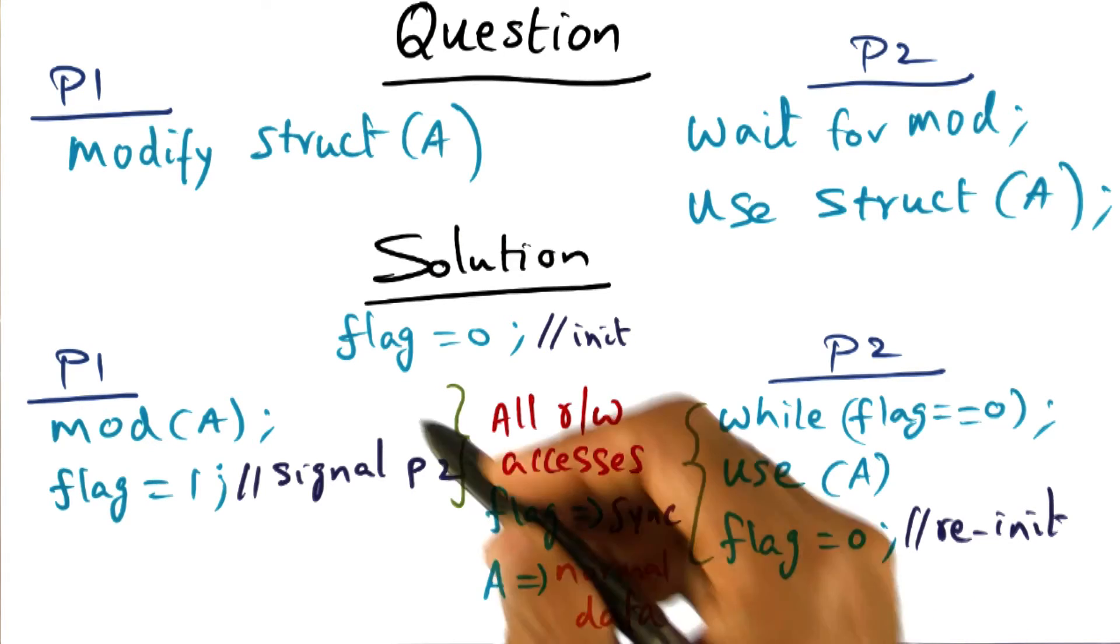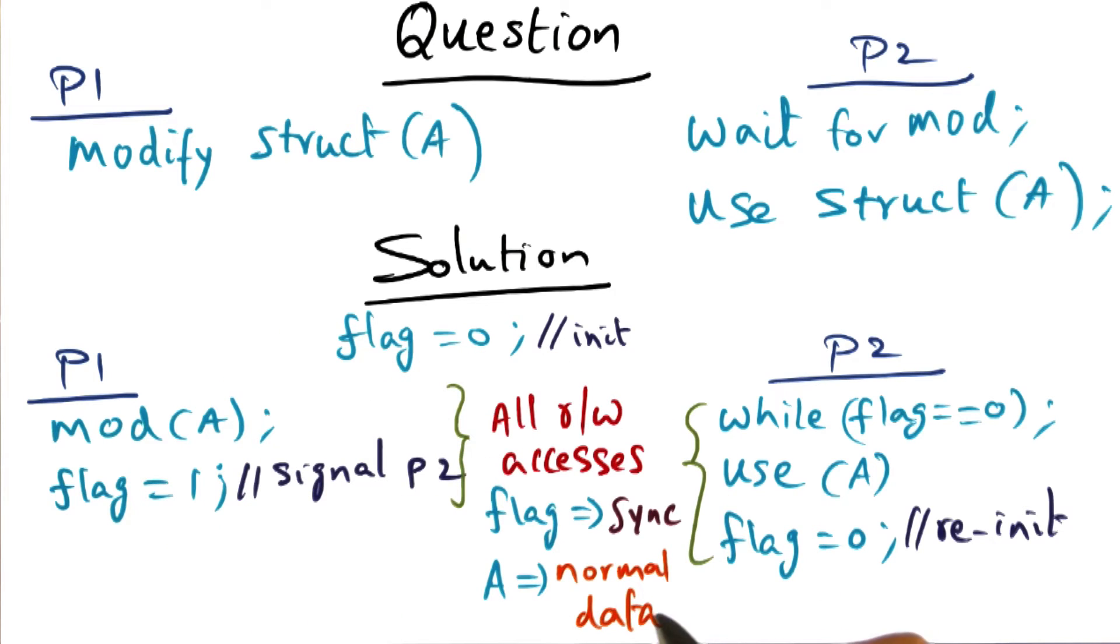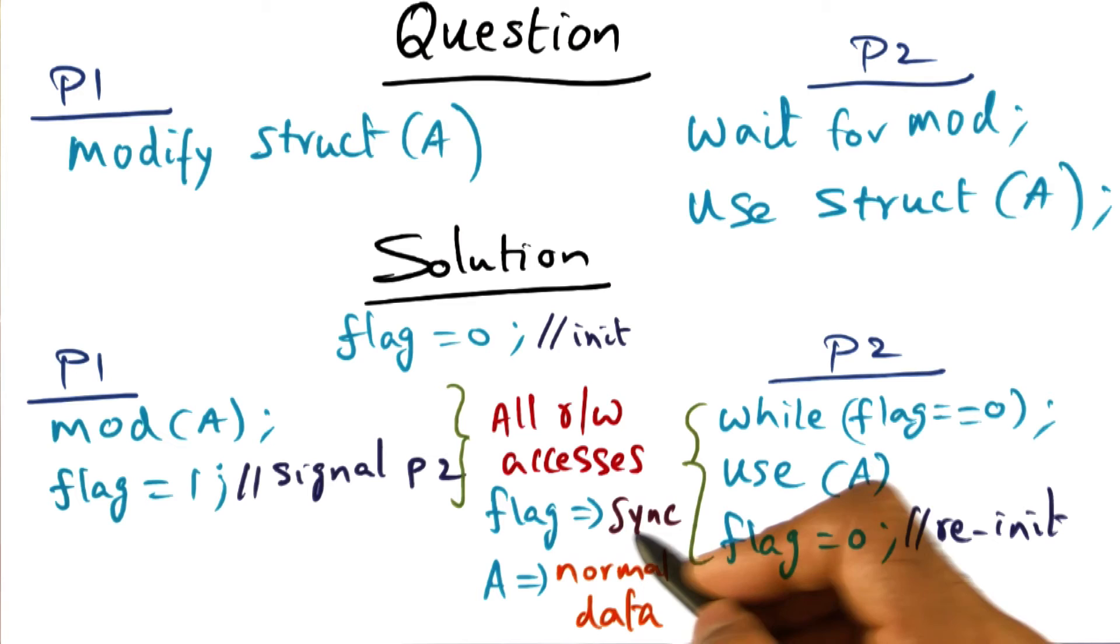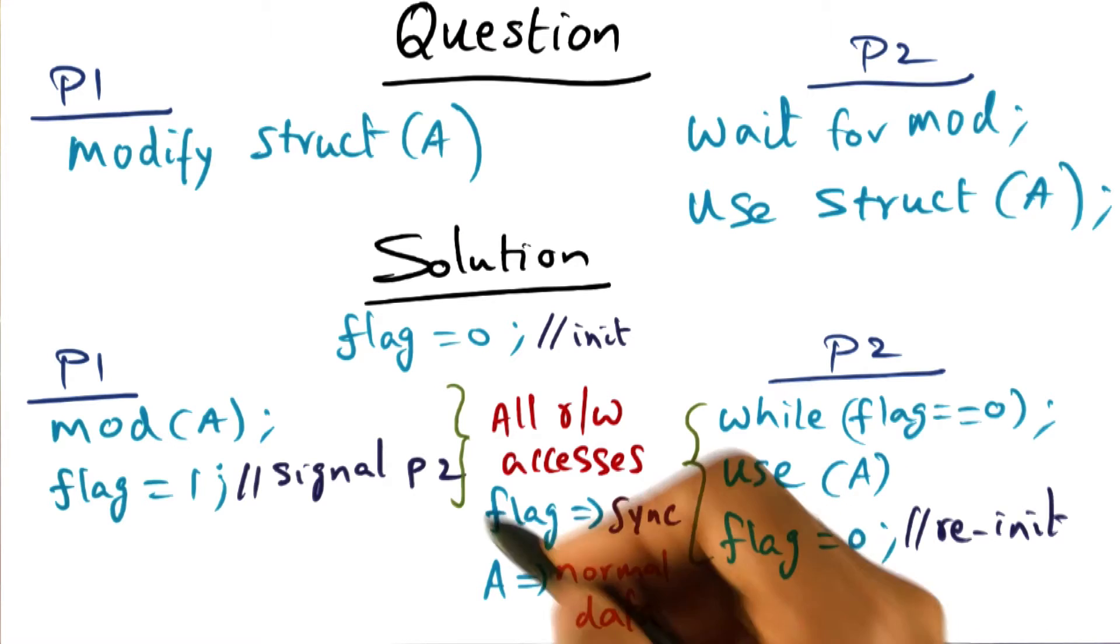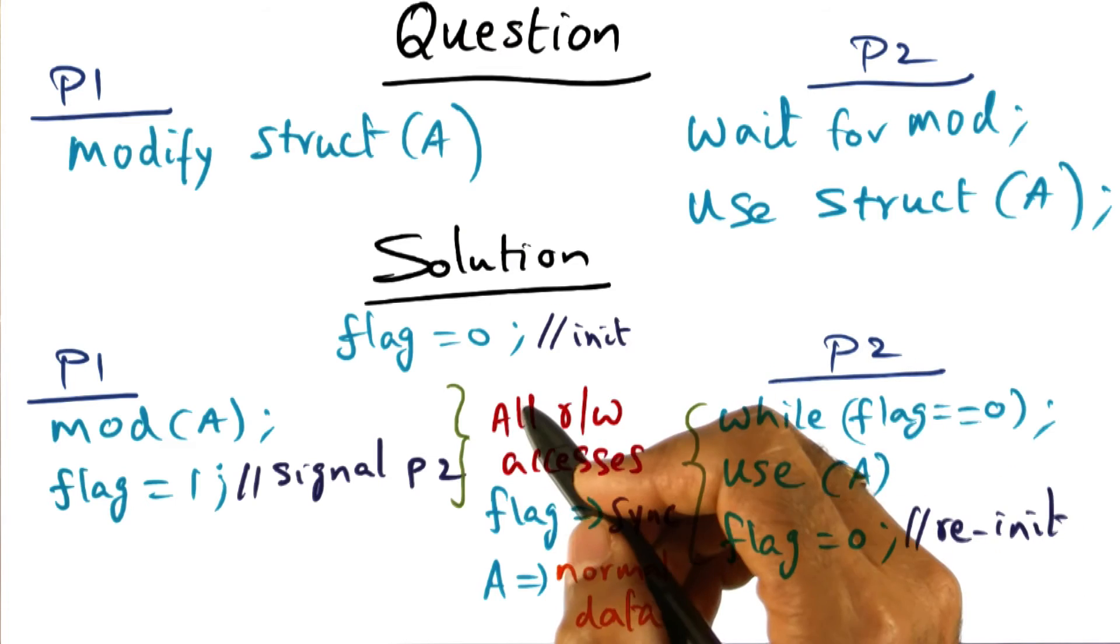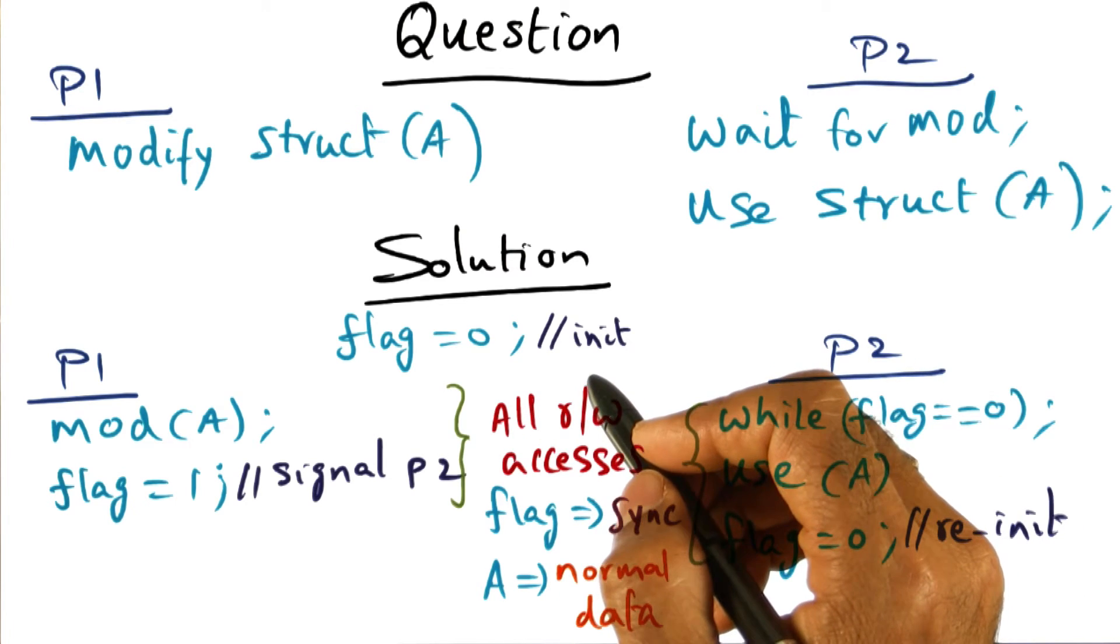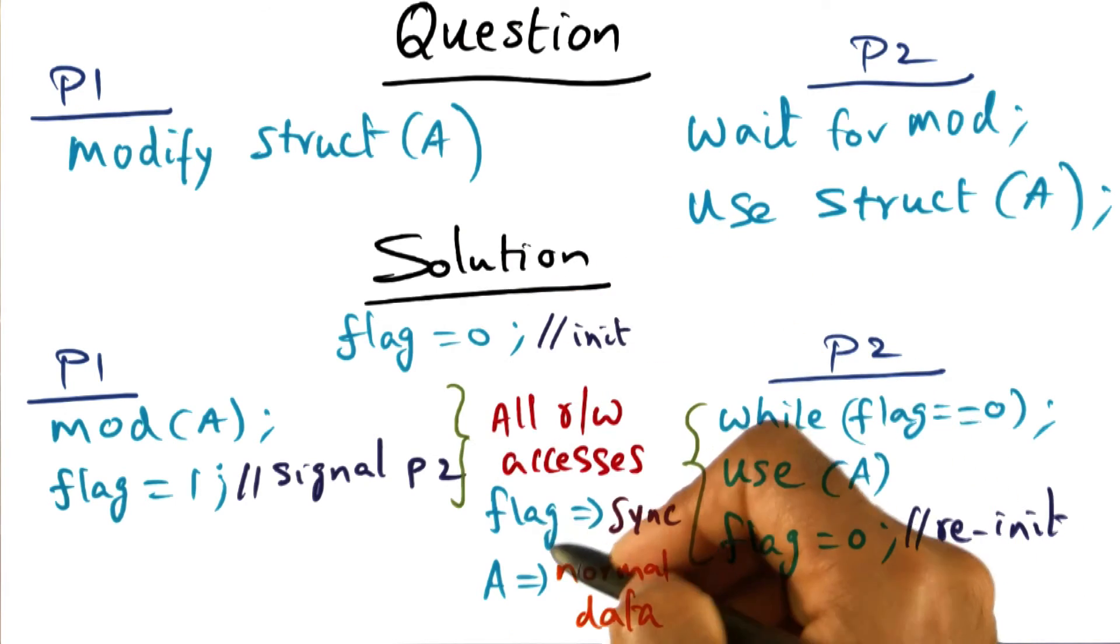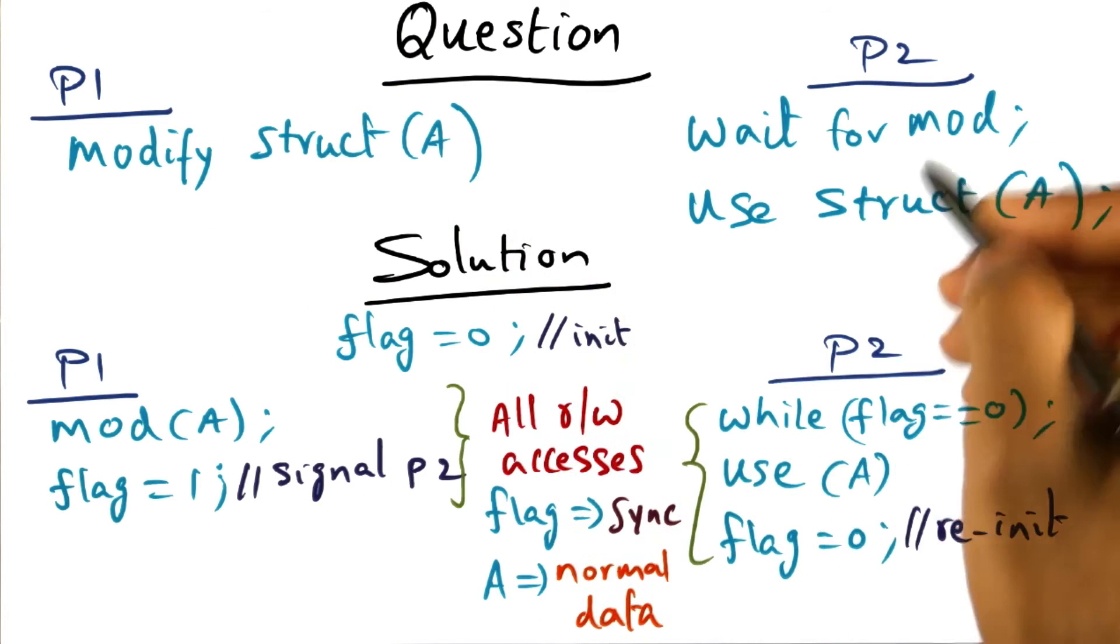On the other hand, the data structure A is normal data, but both accessing the synchronization variable and normal data is being accomplished by simple read write accesses that's available in the processor. And that's how we're able to get the solution for this particular question.